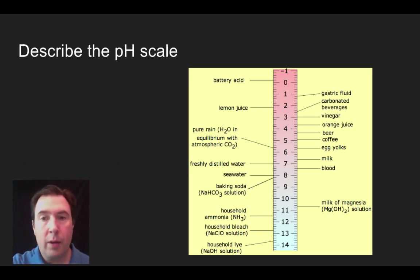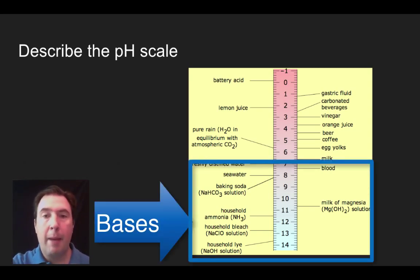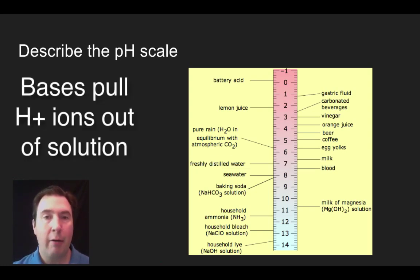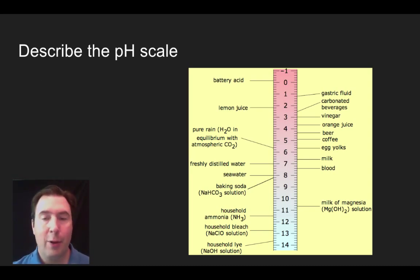If we move down, so we move down to seawater, baking soda, we look down to milk of magnesia, which people take if they have an upset stomach, ammonia, bleach, lye, or sodium hydroxide. We will see that those are things that are going to pull hydrogens out of solution or our bases. So those are our basic definitions of acids and bases. Acids are going to give hydrogens off into solution and bases are going to pull hydrogens out of solution.